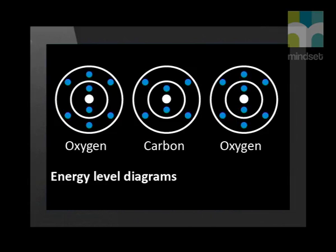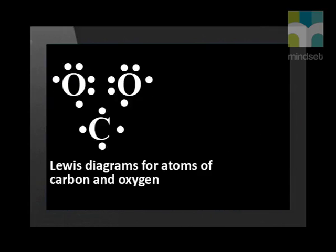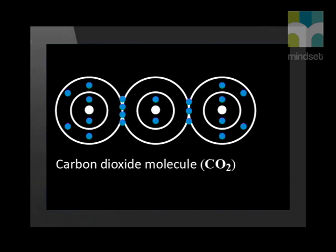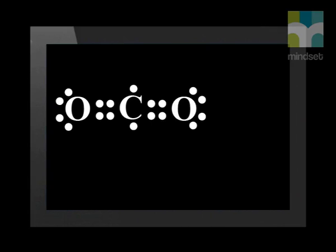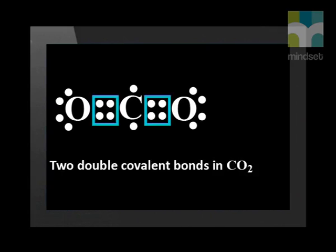Look at the energy level diagram of a carbon atom and two oxygen atoms. As they move closer, the electrons from each atom are attracted by the protons in the other atom's nucleus. The Lewis dot diagrams show that carbon has four unpaired electrons, and each oxygen atom has two unpaired electrons. This attraction pulls the atoms together. The electrons end up being shared by the atoms in a region between the nuclei of both atoms. Here is the Lewis diagram for carbon dioxide, showing it has two double covalent bonds. The molecule of two oxygen atoms and a carbon atom is more stable than the individual separated atoms.